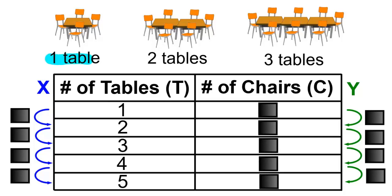If we have one table, we're going to have one, two, three, and four chairs. If we have two tables, we're going to have one, two, three, four, five, and six chairs.